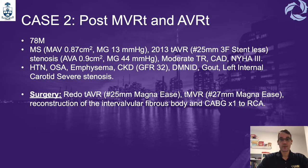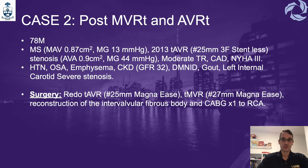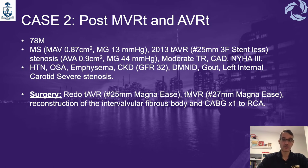Our second case is a 78-year-old male coming for redo AVR and mitral valve replacement due to severe mitral stenosis and bioprosthetic aortic valve stenosis, previously inserted in 2013. The patient had important comorbidities including OSA, emphysema, chronic kidney disease, diabetes, and severe left-sided carotid stenosis. The surgeon performed a redo tissue AVR with a 25 Magna Ease, a tissue mitral valve replacement with a 27 Magna Ease, reconstruction of the intervalvular fibrous body, plus one aorto-coronary bypass.